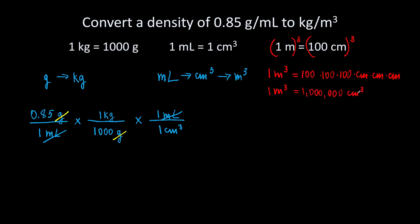Very good. Now we are going to take this conversion factor and plug it in right here to get rid of cubic centimeters and have cubic meters. We have cubic centimeters on the bottom, so we will write 1 million cubic centimeters on top of the fraction so that cubic centimeters cancel out, and 1 cubic meter on the bottom of the fraction. Cubic centimeters cancel out and now we are left with cubic meters.